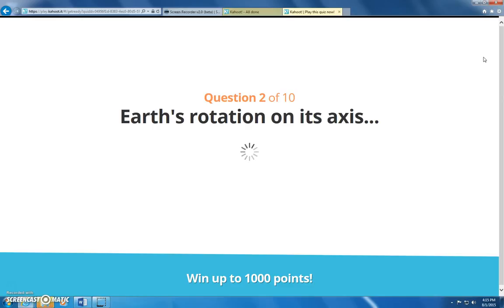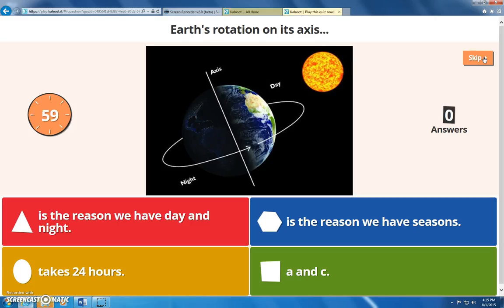Alright, the next question is earth's rotation on its axis does. It is the reason why we have day and night, takes 24 hours, is the reason we have seasons, or is the reason we have day and night and takes 24 hours?